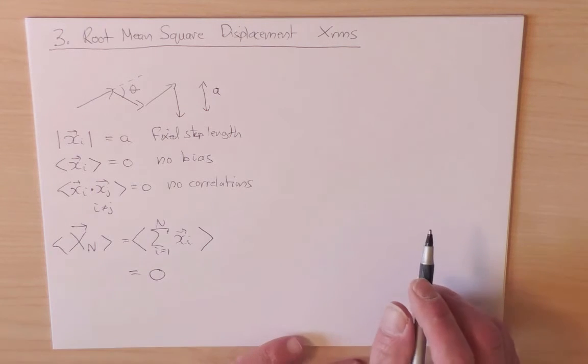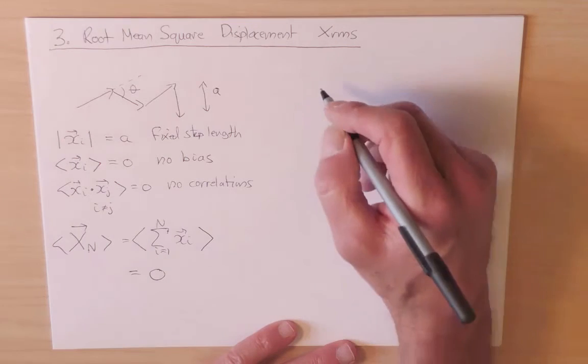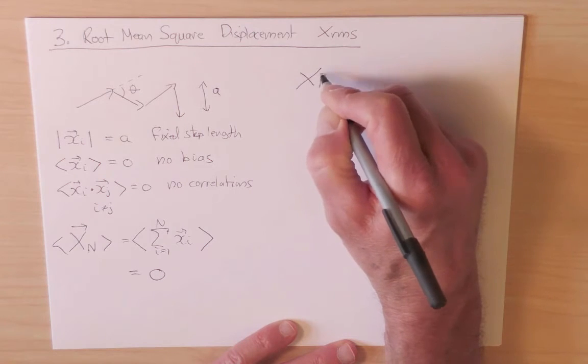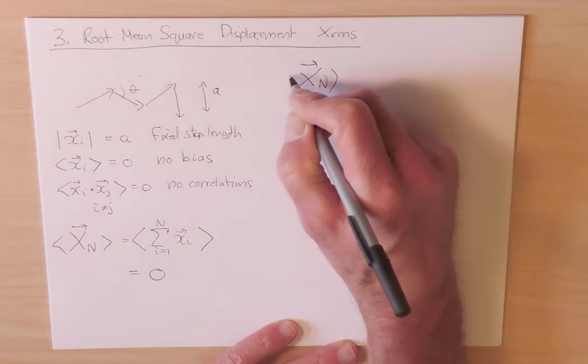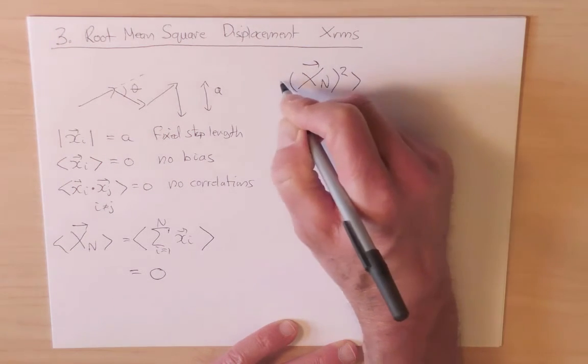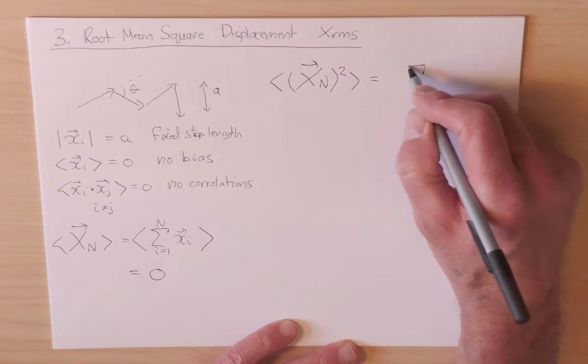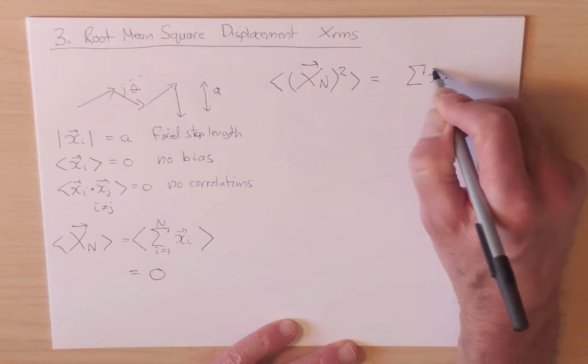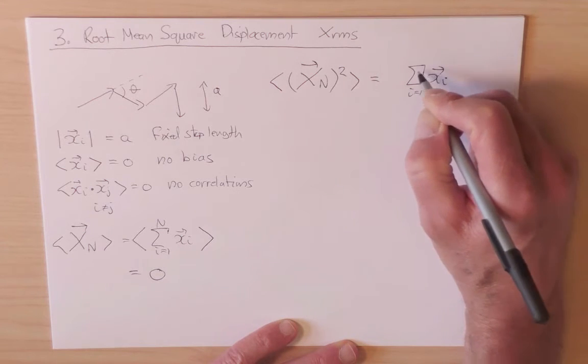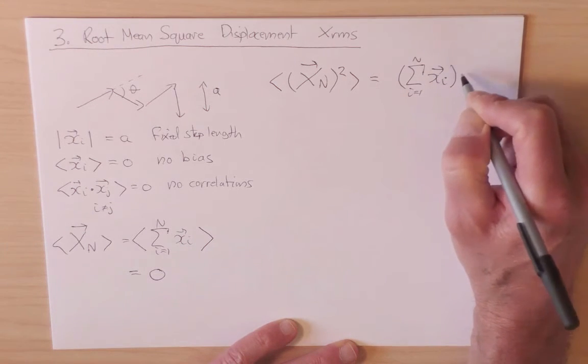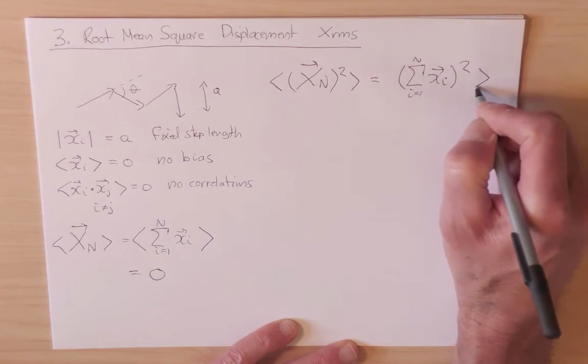Let's now look at the mean square displacement. So we're going to ask for X_n, square it, and then take the average. And so what is this quantity? So again, we have to take the sum of the displacements, X_i, i equals one to n, square it, and then take the average value.